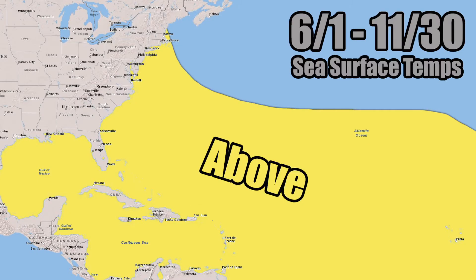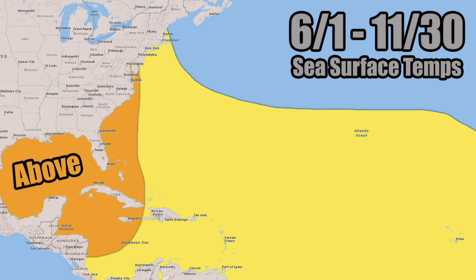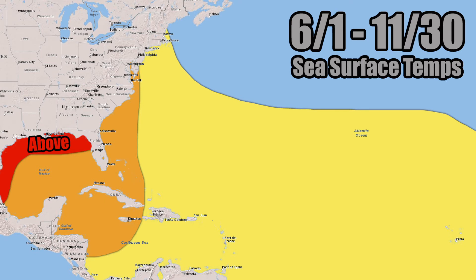Here is the sea surface temperature anomaly forecast going from June 1st through November 30th. I am forecasting slightly above average sea surface temperatures through much of the northern Atlantic, from the Gulf of Mexico all the way to off the coast of western Africa. The most above average temperatures are expected from around Cuba westward through the Gulf of Mexico and along the east coast up to about Delaware and New Jersey. Well above average sea surface temperatures are expected off the coast of Texas, off northeastern Mexico, and through the northern Gulf of Mexico.